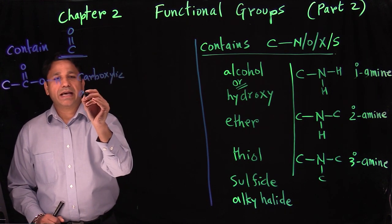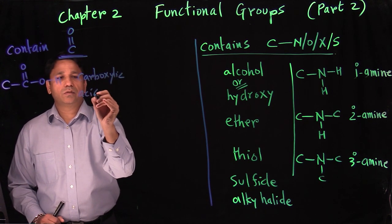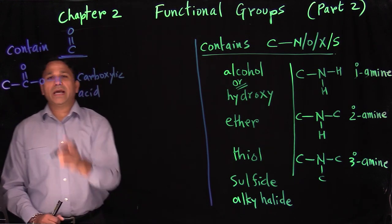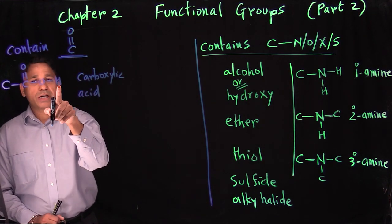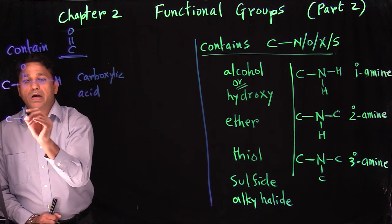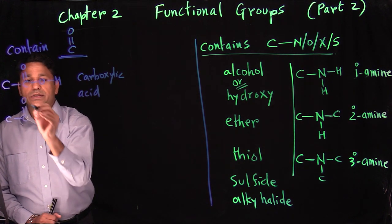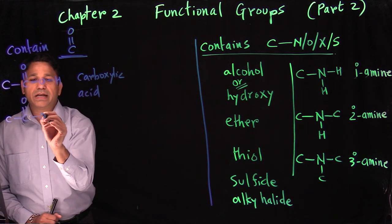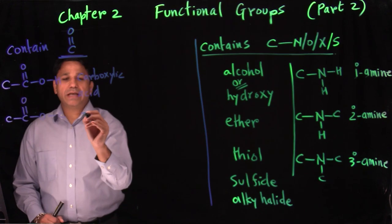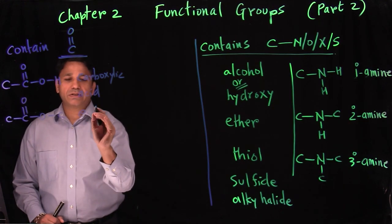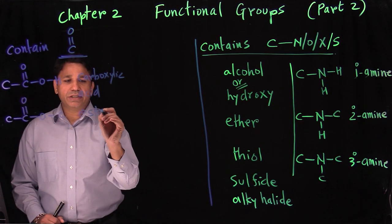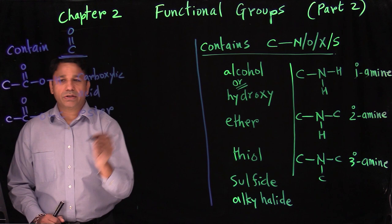So that's carboxylic acid. And when you have a hydrogen that can be potentially replaced by a carbon — if I replace that hydrogen with a carbon — it becomes an ester. So carboxylic acid changes to an ester.